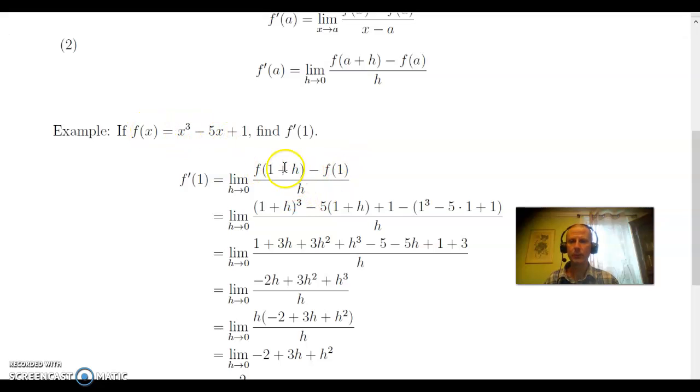Now, in order to get f(1 + h), we simply replace all the x's in the rule for f(x) with parentheses (1 + h), and therefore get the limit as h goes to 0 of the quantity (1 + h) cubed minus 5 times the quantity (1 + h) plus 1. And now we've got to subtract f(1). To subtract f(1), we simply plug in 1 for x, but since we're subtracting the whole result, we have to put it in parentheses to be correct. So we subtract the quantity of 1 cubed minus 5 times 1 plus 1.